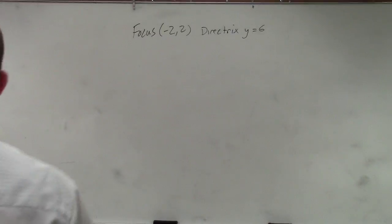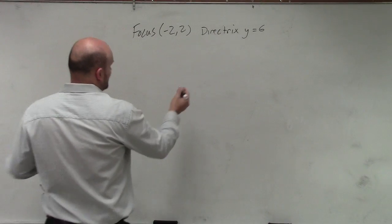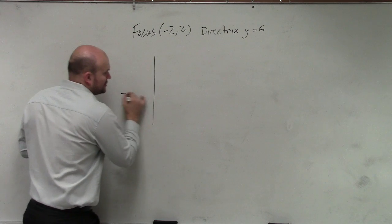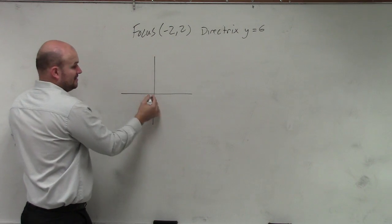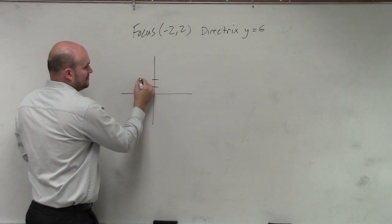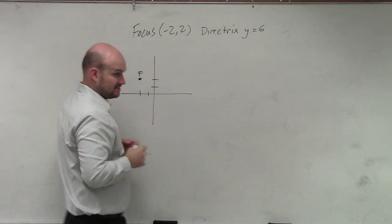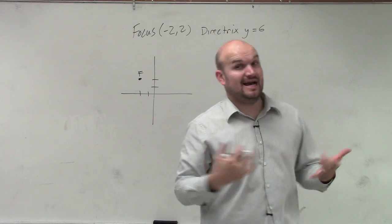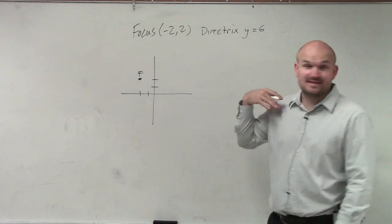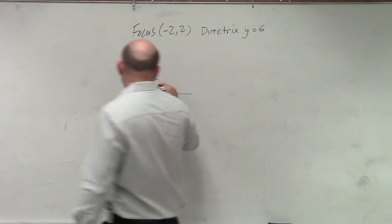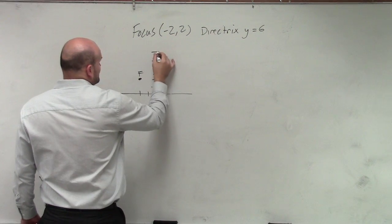Guys, draw the information. So you're given a focus. Everybody in this class should know that the focus is a point: negative 2, positive 2. Label it focus. The directrix is a line, Y equals 6. That is a horizontal line. 1, 2, 3, 4, 5, 6.